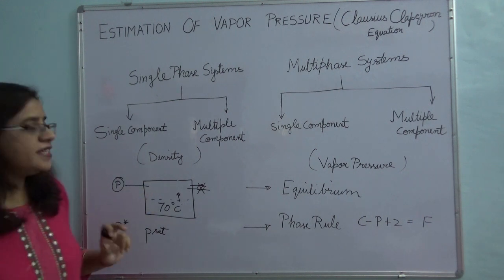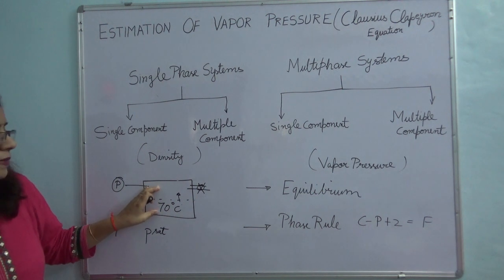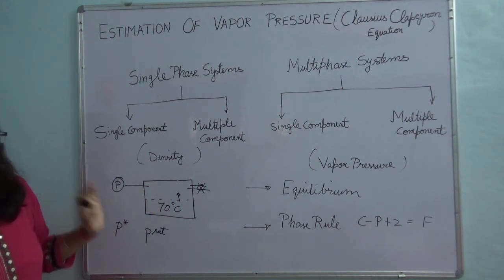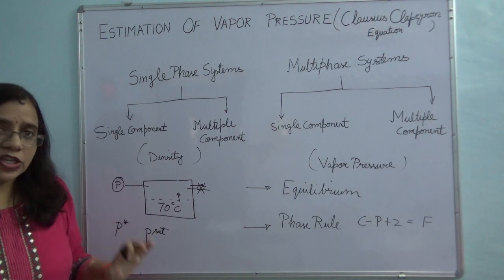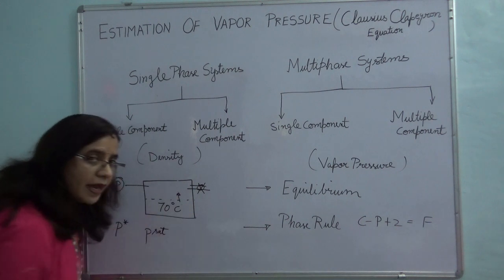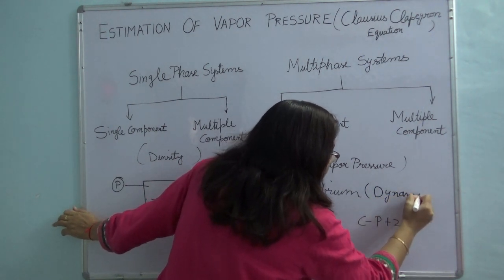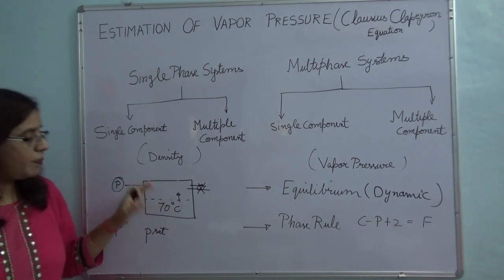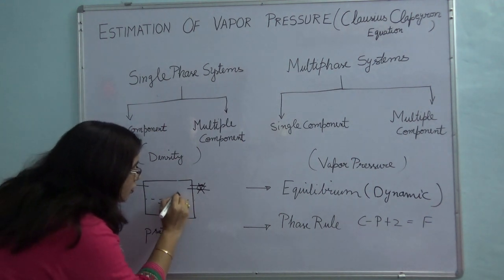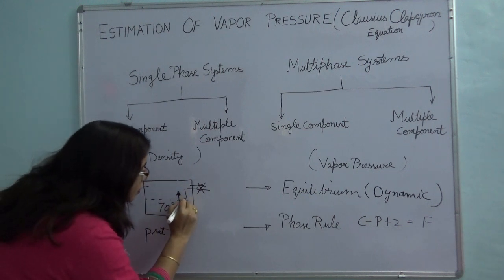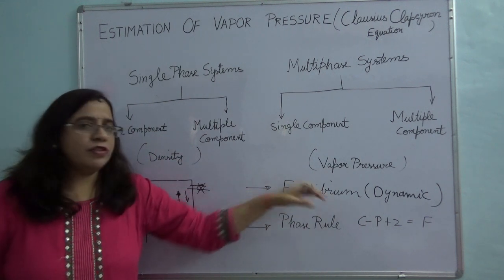So what we see is that if you keep a system which involves two phases, ultimately it comes to equilibrium. At that equilibrium point nothing changes with respect to time. That does not mean that the water molecules are not leaving or coming back — we call this dynamic equilibrium. At the molecular level, some number of molecules will be leaving the liquid phase and at the same time the same number of molecules will be coming back from the vapor phase to the liquid phase. So you have a dynamic equilibrium which is being established.